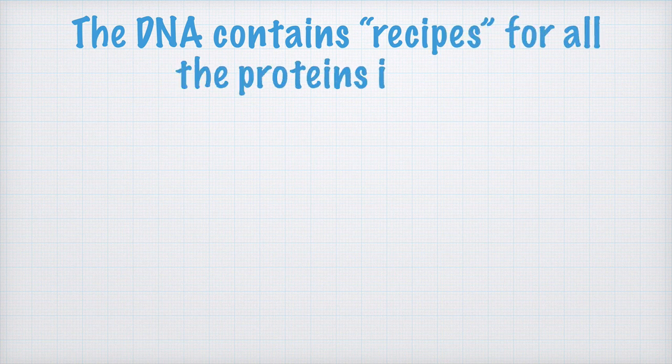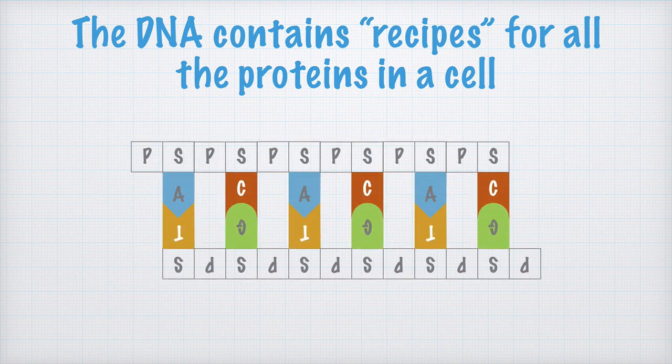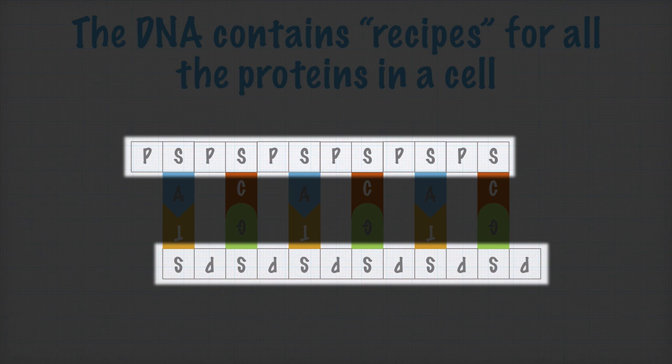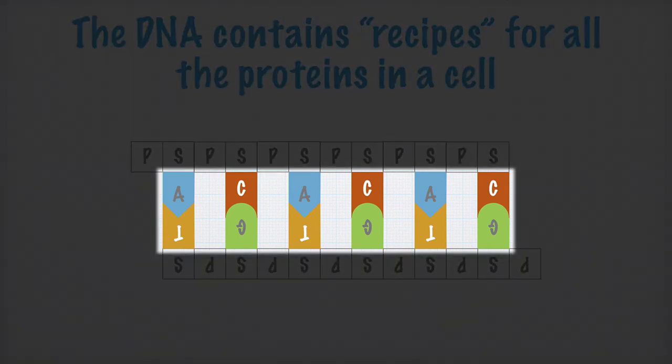Alright then, as I said, the DNA molecule contains recipes for all the proteins in the cell. If you've seen my previous videos, you have already seen this image of a DNA molecule. Here we have the backbones of the double helix with alternating sugar and phosphate residues. In between them we have the nucleobases, where A always pairs with T and C always pairs with G.